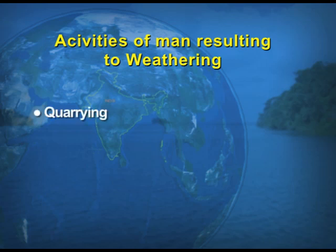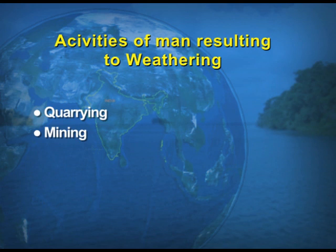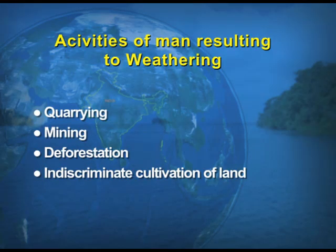Lastly, we take up the activities of man, which result in weathering. Activities like quarrying — which is the mining of minerals — and mining. Also deforestation, because man is responsible for changing the environment and is involved in deforestation for various reasons. Then there is indiscriminate cultivation of the land, because in proportion to the population the land is not sufficient, so repeated cultivation of the same piece of land is known as indiscriminate cultivation, which results in the disintegration of rocks.